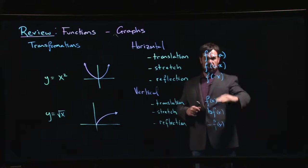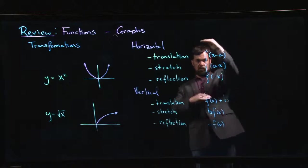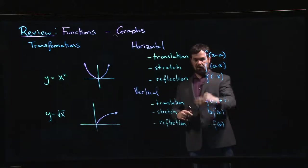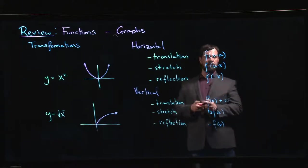Same idea for vertical translation - you're shifting up or down. For the stretch, if B is bigger than 1 you're making it bigger, if it's smaller than 1 you're squishing it down. Reflection: you're reflecting across the x-axis.